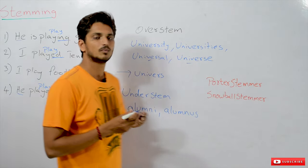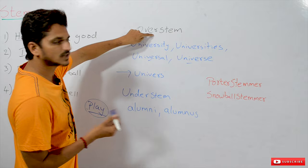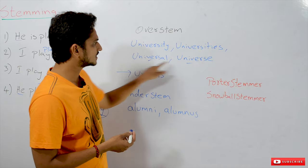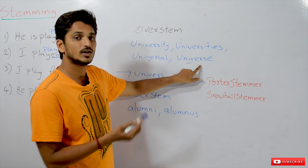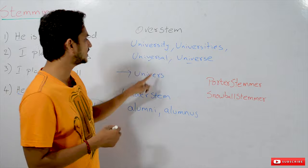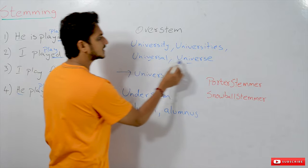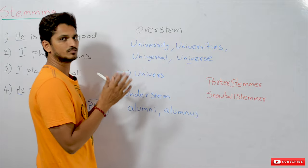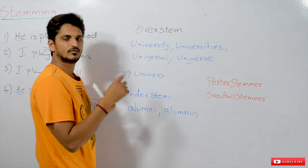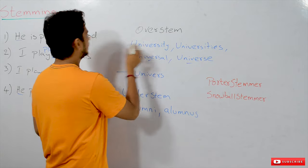But we have some problems with stemming. The first problem is overstemming. Consider: 'university,' 'universities,' 'universal,' and 'universe.' In the stemming algorithm, all four words are considered to come from the base stem 'universe.' But in reality, 'universal' and 'universe' are from the same stem, while 'university' and 'universities' are from a different stem.